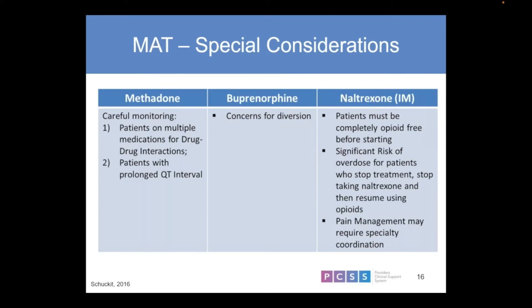For naltrexone, the patient needs to be off full opiate agonists for a period of time, putting them at risk during that waiting period. This is often a reason it doesn't work well — people don't show up to get the shot because they've relapsed. There are also concerns around pain management, as it blocks all other opioids. In that situation, we would use either a non-pharmacologic or non-opioid pharmacologic treatment for pain, or in a surgical setting it can be overridden by the use of potent fentanyl analogs.